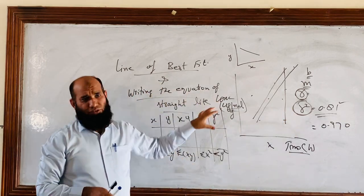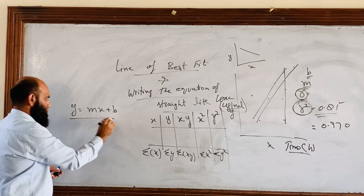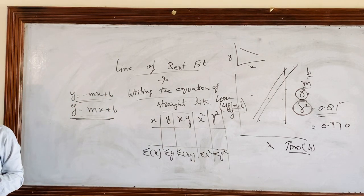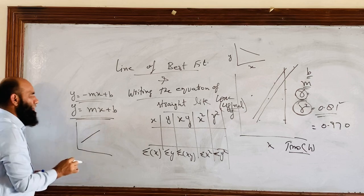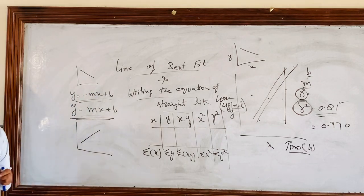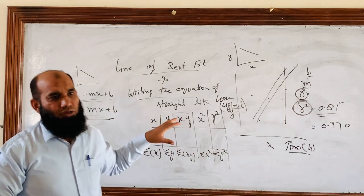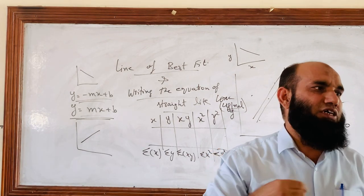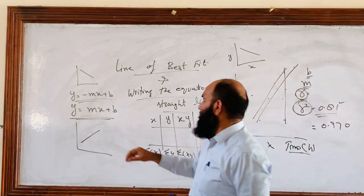Next is how to write the equation of these. We know that y is equal to mx plus b. It may also be y is equal to minus mx plus b. When we say equation of the straight line, the equation will differentiate us by the value of slope. If slope is positive, then we will say it's an increasing trend, and the equation would be y is equal to mx plus b.